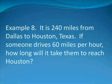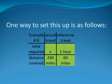Example eight. It is 240 miles from Dallas to Houston, Texas. If someone drives 60 miles per hour, how long will it take them to reach Houston? One way to set up the problem is as follows. On your screen, you note the items compared and the characteristics compared. Actual travel versus reference travel are the column titles. Time required versus distance covered are the row titles.